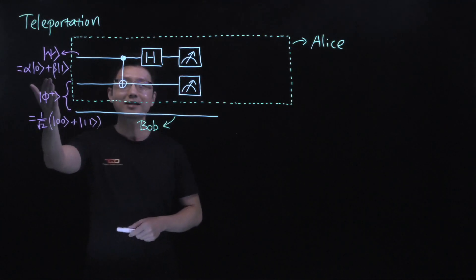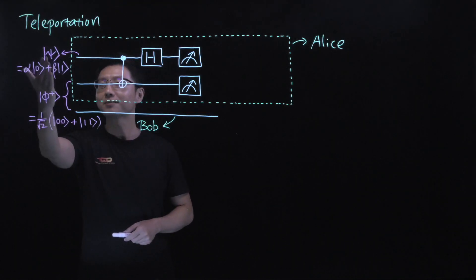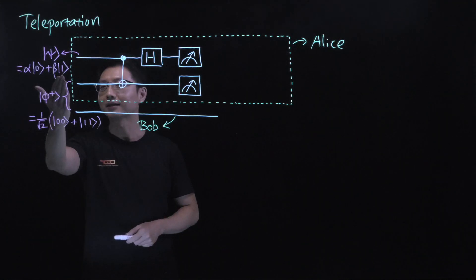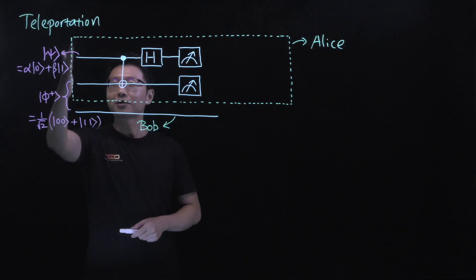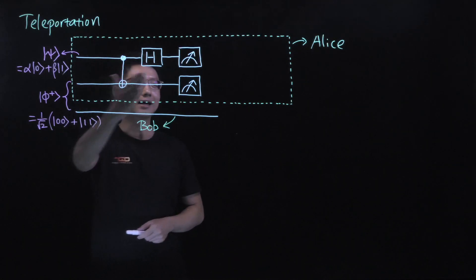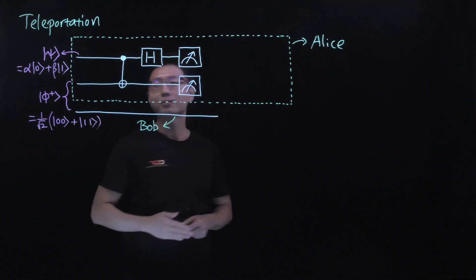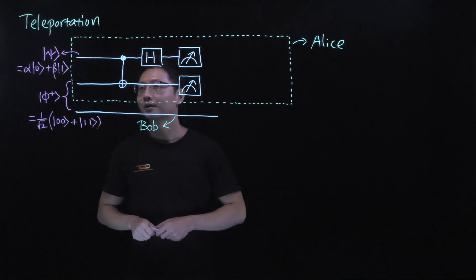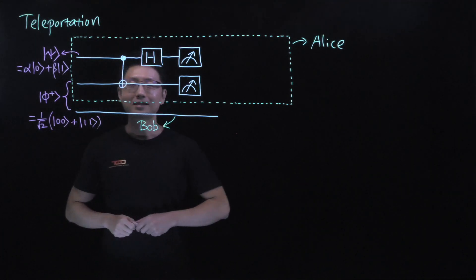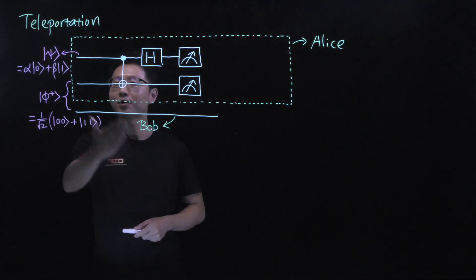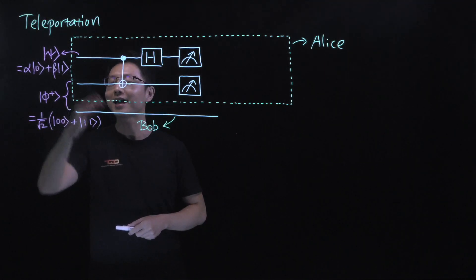On top of that, Alice has another qubit which is in the state Psi, that is in a linear superposition of |0⟩ and |1⟩. The dotted green box is to remind you that the top two qubits are in Alice's lab, and the third qubit is in Bob's lab. The task that Alice would like to do is to tell Bob what is the state Psi that she has.